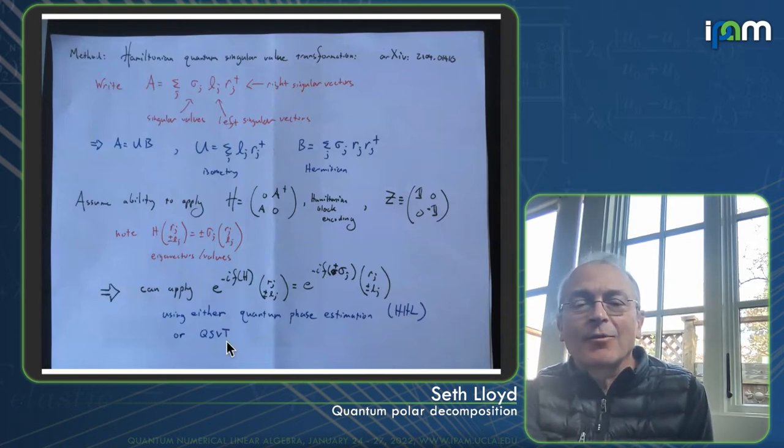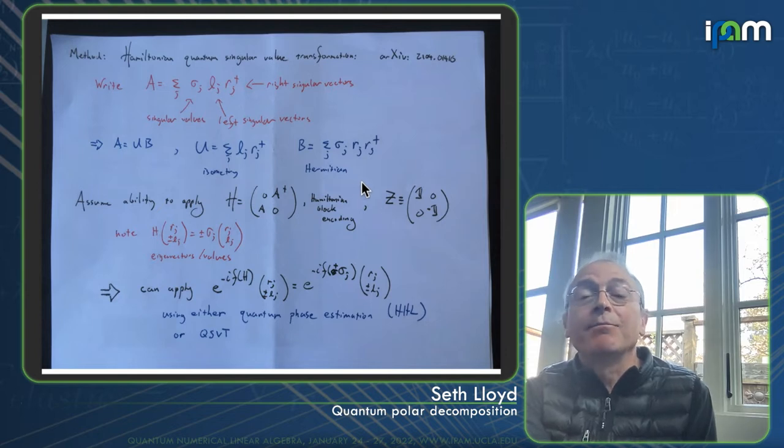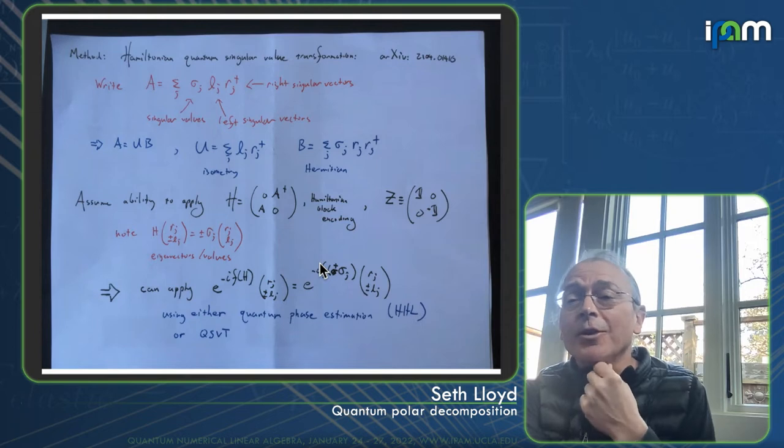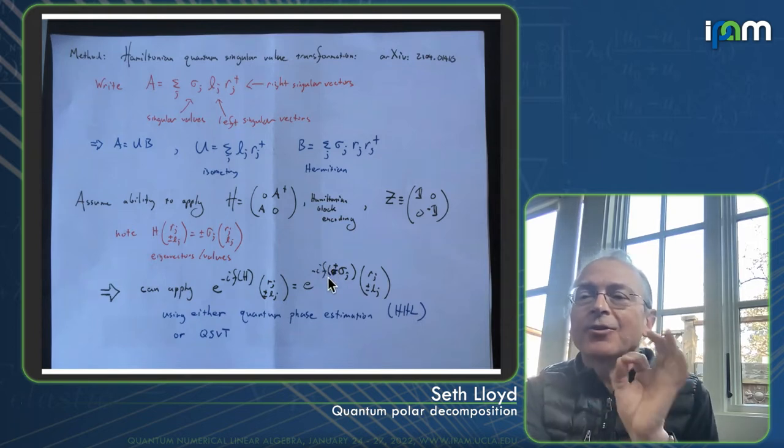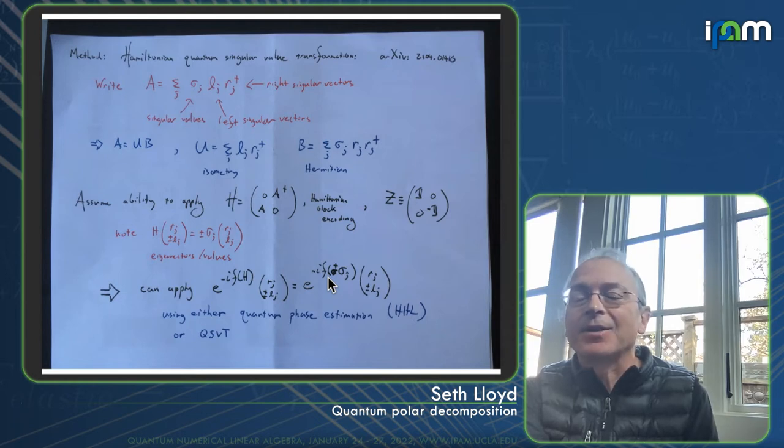And then there's a nice improvement on that from the quantum singular value transform, which instead uses these alternating operators to decompose F in terms of Chebyshev polynomials. And then you get an extra, this improves the accuracy from order one over epsilon, where epsilon is the accuracy, to log of one over epsilon in many cases.